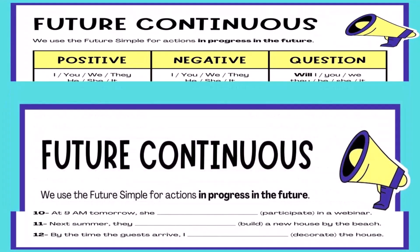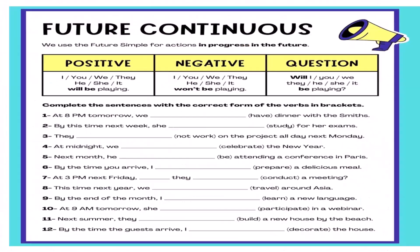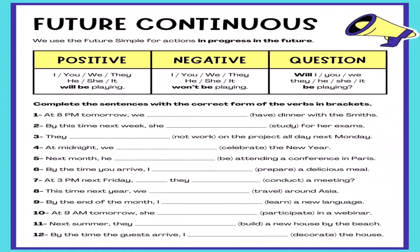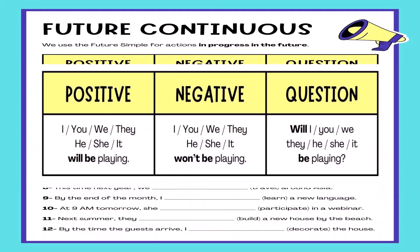Future Continuous Tense: We use the Future Continuous for actions in progress in the future. Positive form — I, you, we, they, he, she, it + will be + playing.